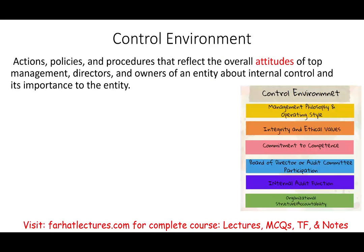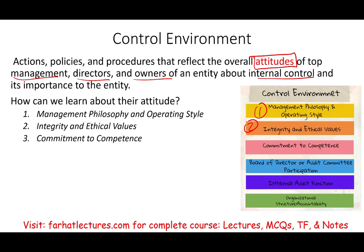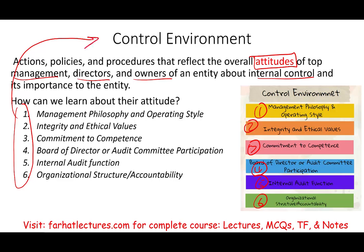The control environment consists of actions, policies, and procedures that reflect the overall attitude of top management, directors, and owners of the company toward internal control and its importance. If they value internal control, the employees at the bottom will value internal control as well. We can assess this attitude through six indicators: management philosophy and operating style, integrity and ethical values, commitment to competence, board and audit committee participation, the internal audit function, and organizational structure and accountability.